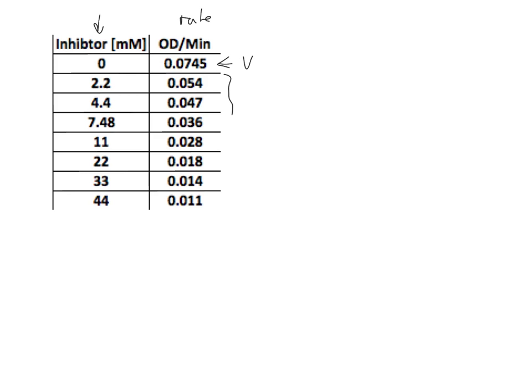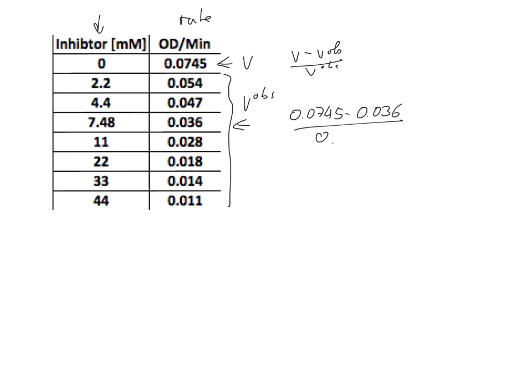All the others are the V observed. What I do is simply calculate in a different column — you can do that with a spreadsheet, with Excel or whatever. I simply calculate V minus V observed divided by V observed. For example, we would have 0.045 minus 0.036 divided by 0.036.